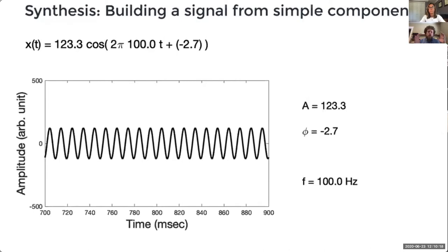So this is a cosine, I'm just going to call it a sine wave. It has some amplitude 123.3, some frequency 100 hertz, the two pi is just a converter radians, and some phase offset. And I'm going to be playing you a two second recording, I'm just showing you the time from 700 to 900 milliseconds. So very straightforward.